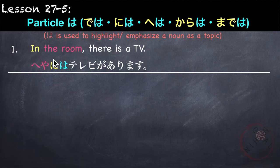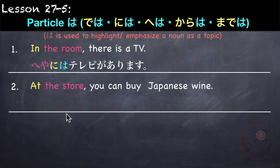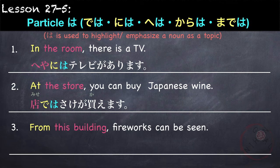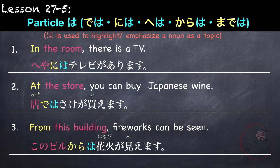Here, particle に is followed by は to highlight the room — emphasizing that in the room there is a TV. Another example: At the store you can buy Japanese wine — 店では 酒が 買えます。From this building fireworks can be seen — このビルからは 花火が 見えます。